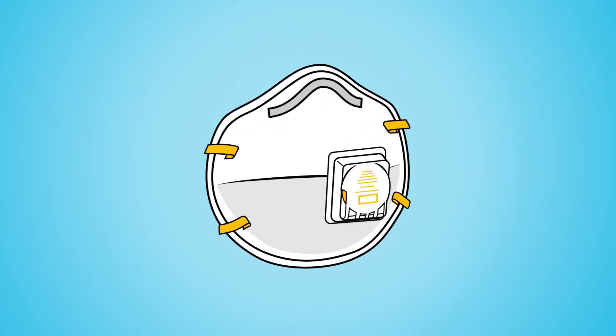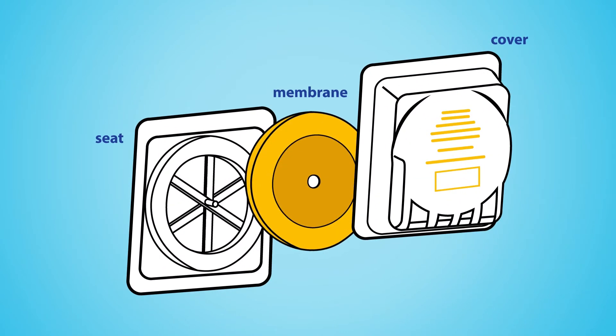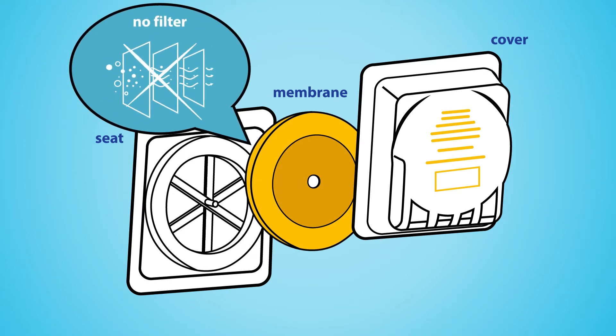Exhalation valves on N95 respirators consist of three parts: the cover, the seat, and the membrane. Exhalation valves do not have a filter within.